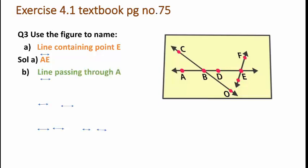Next, you have to name the line passing through point A. From the given figure, line AE is passing through point A.